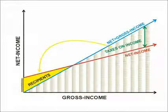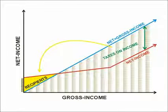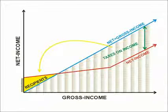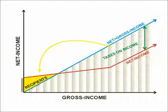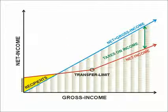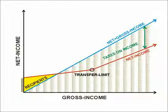Similar to this idea, the transfer limit models use income taxes too, but they have a kink. At this point, the income tax changes. This point is called the transfer limit and may vary in different proposals.